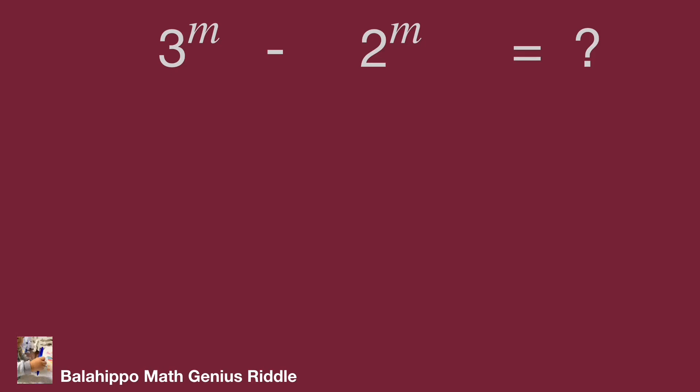If m equals 0, 3 power of m equals 3 power of 0 equals 1. 2 power of m equals 2 power of 0 equals 1. 3 power of 0 minus 2 power of 0 equals 1 minus 1 equals 0.